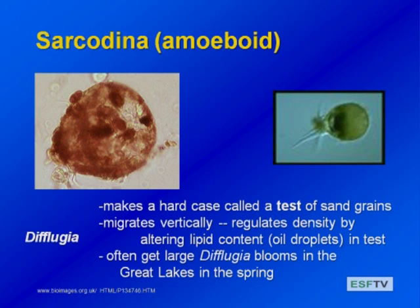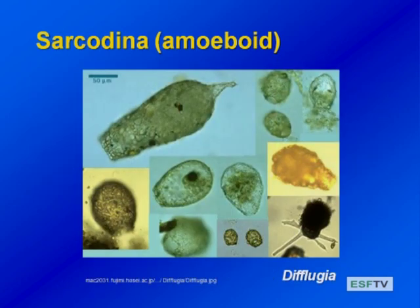You'll often see blooms of these in the spring when they're also suspended by turbulence at mixing time. Different species of Diflugia — the one genus that does this quite a bit — make different shaped cases, and just like with caddisflies in streams, you can identify them based on the shape of their case.